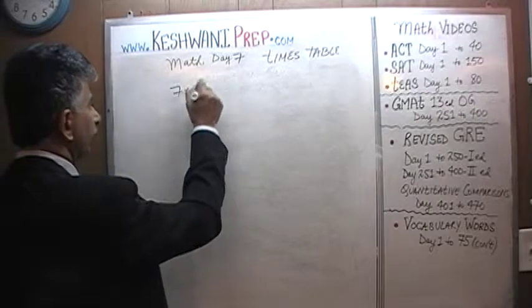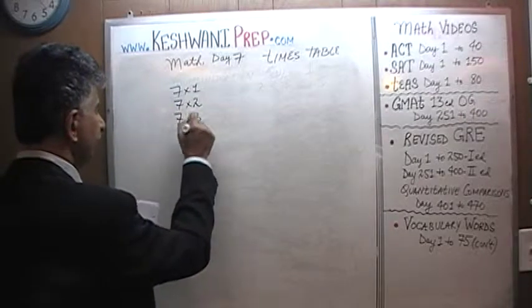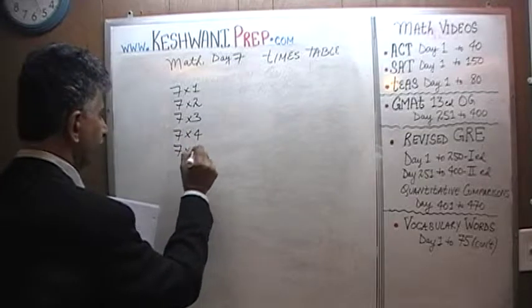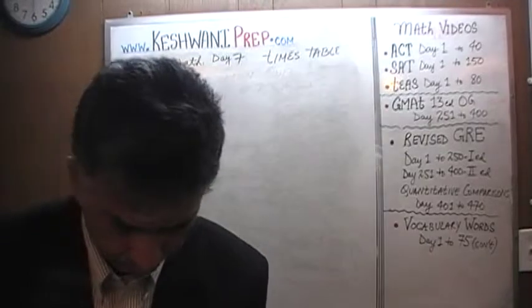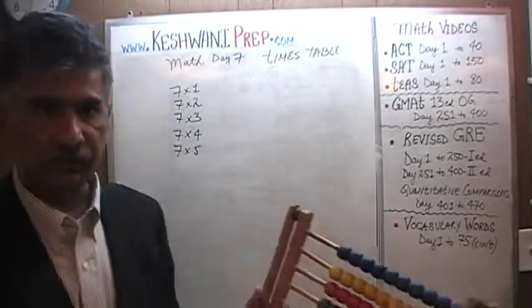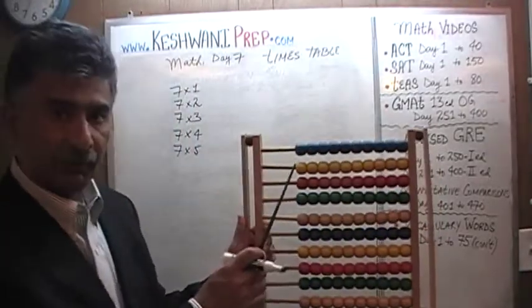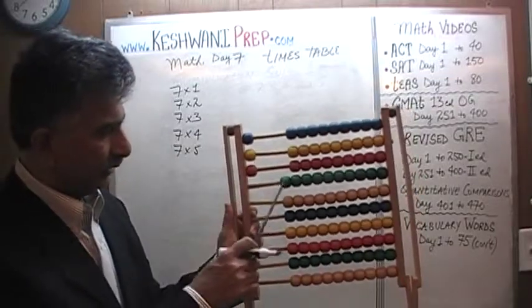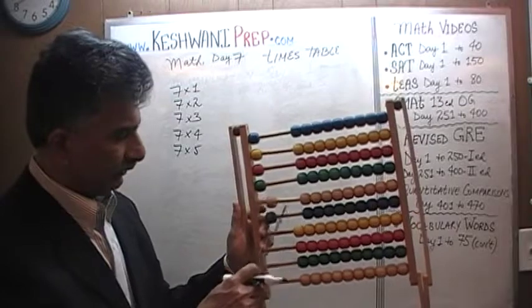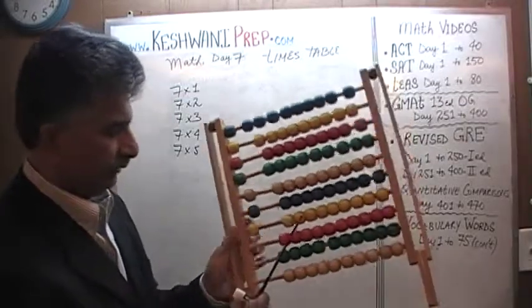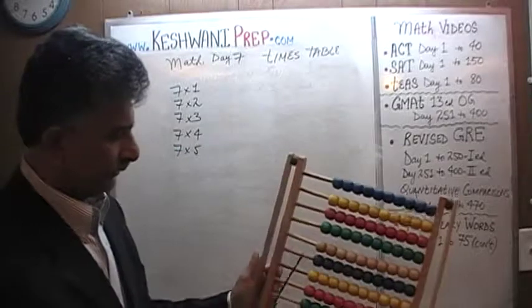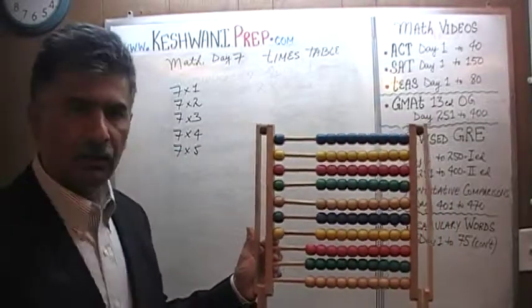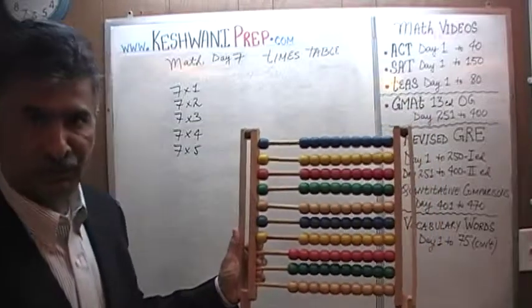7 ones, 7 twos, 7 threes, 7 fours, and 7 fives. Let's find out what 7 ones are. So we need 7 ones: 1, 2, 3, 4, 5, 6, and 7. Of course 7 ones are 7. That was a silly thing to do, wasn't it? 7 ones are 7.